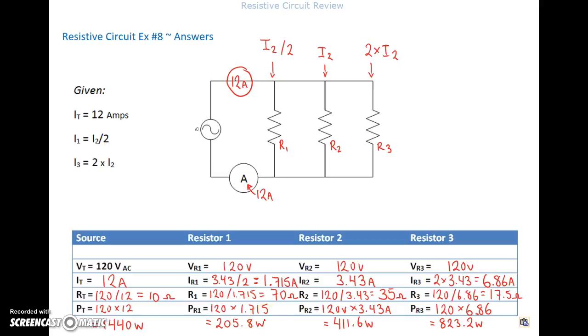And then we knew that the total current was 12 amps. So let's just make sure that all of our individual currents add up to 12. So 1.715 plus 3.43 plus 6.86 gives me 12.005 amps. So everything is working out. If I do the 120 times the 12, that's going to give me 1,440 watts.